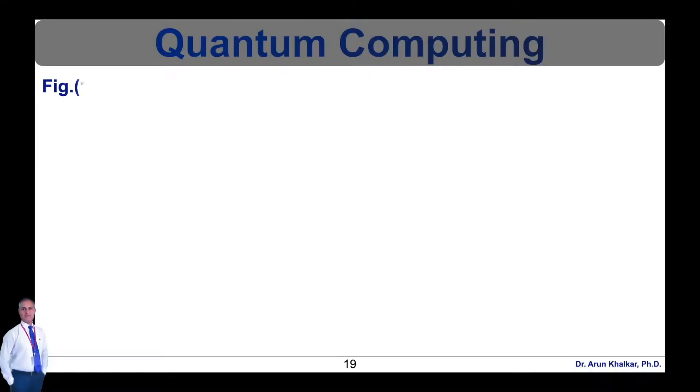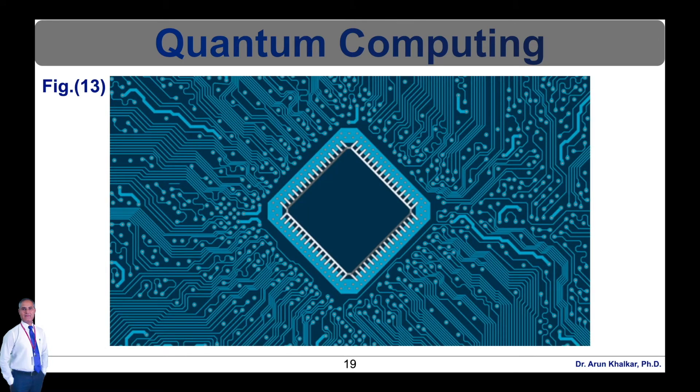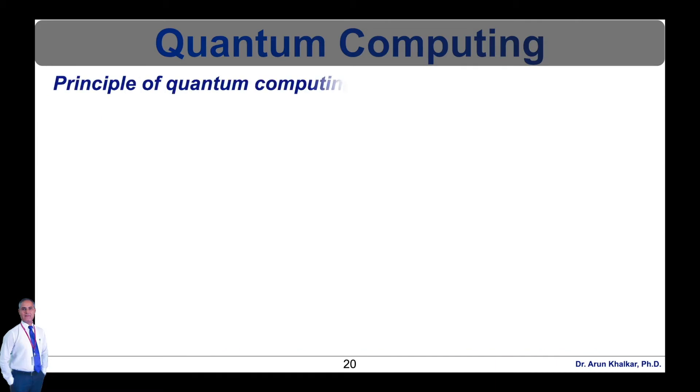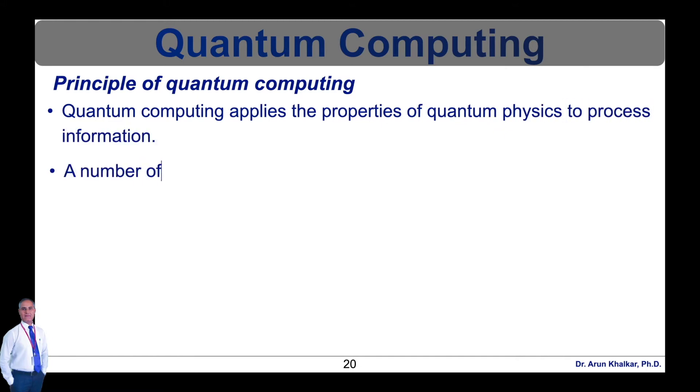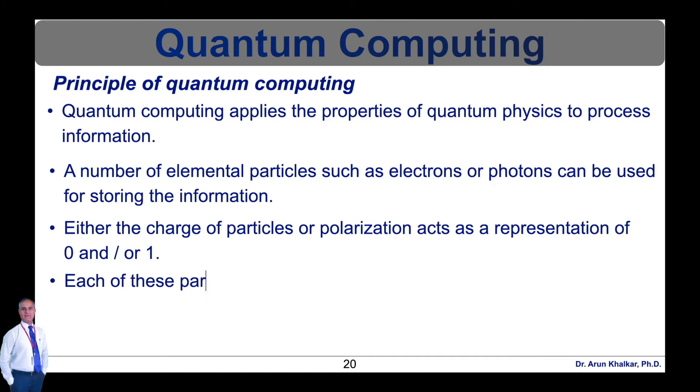Quantum computing applies the properties of quantum physics to process information. A number of elemental particles such as electrons or protons can be used for storing the information. Either the charge of particles or polarization acts as a representation of zero and or one. Each of these particles is known as a quantum bit or qubit. The qubit is a unit of quantum information.